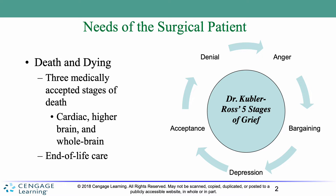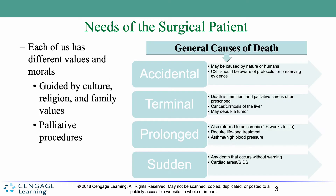Next, we're going to discuss the general categories of causes of death. There are four general causes: accidental, terminal, prolonged, and sudden.